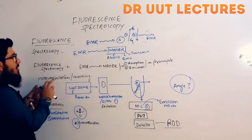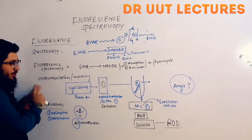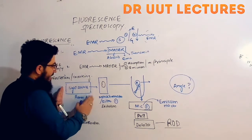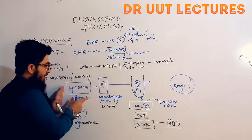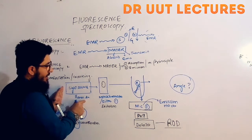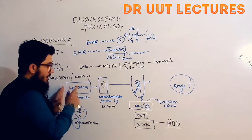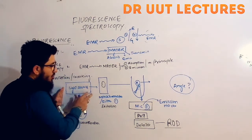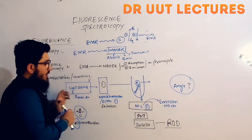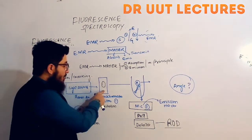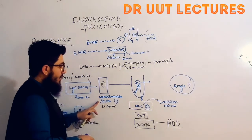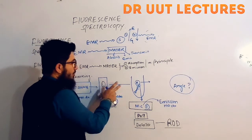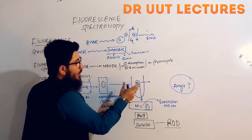Before we move towards the working, we need to know the instrumentation of fluorescence spectroscopy. The very first component is the light source or radiation source, which is the xenon arc lamp — the most commonly used source today. Just in front of the radiation source we have a monochromator, also known as a filter, which is called the excitation monochromator.